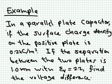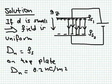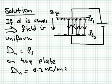To illustrate this concept, consider a parallel plate capacitor with a surface charge density on the positive plate of 0.2 nC/m², a separation between the two plates of 1 mm, and a dielectric constant ε_r = 2.2 filling the gap. We want to find the voltage difference between the positive plate and the negative plate. As explained in the lecture, when the plate spacing is small relative to the other dimensions, the field is uniform inside.